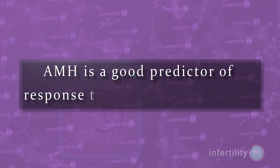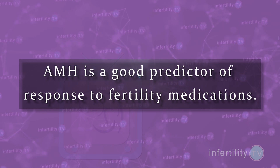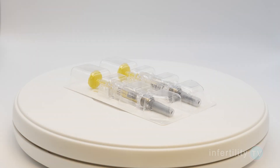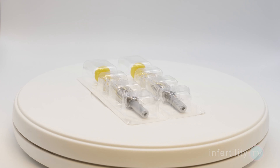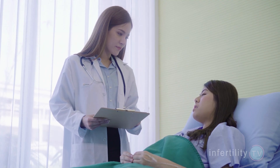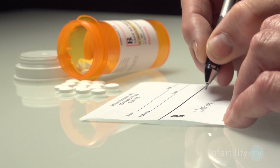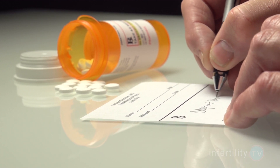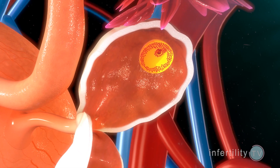AMH is a good predictor of response to fertility medications. If you do have infertility, or don't have infertility but are going to be doing a treatment that involves the use of fertility injections — like for fertility preservation — then AMH is a very strong predictor of how you will respond to fertility medications. Women with low AMH don't respond as well. They require more aggressive treatment protocols and higher doses of medications, but still end up with lower numbers of eggs and more cycles that get cancelled for poor response.